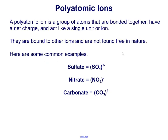Polyatomic ions. A polyatomic ion is a group of atoms that are bonded together, have a net charge, and act like a single unit or ion. They are bound to other ions and are not found free in nature.